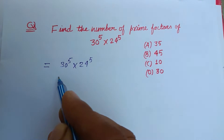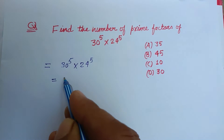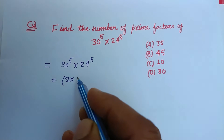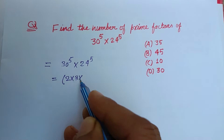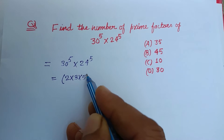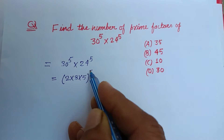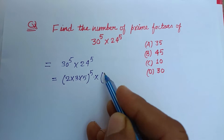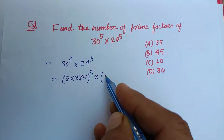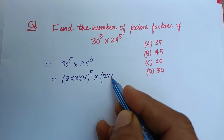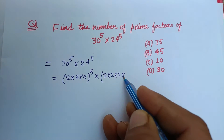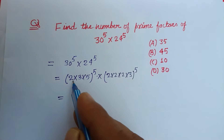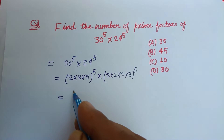First we find the prime factors of 30 and 24. For 30: 30 = 2 × 3 × 5. For 24: 24 = 2³ × 3. So 30⁵ × 24⁵ involves these prime bases raised to the power 5.